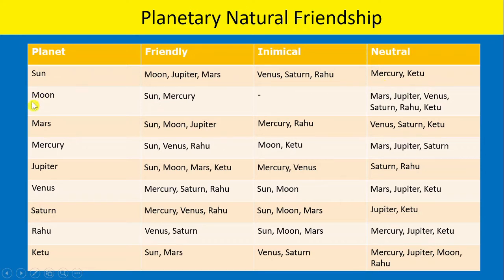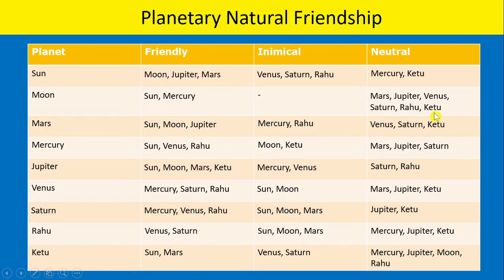Now the Moon — Moon thinks Sun and Mercury are friends. But Moon does not think that anyone is his enemy. Mars, Jupiter, Venus, Saturn, Rahu, and Ketu are neutral to Moon. And so on.